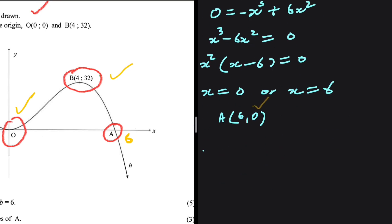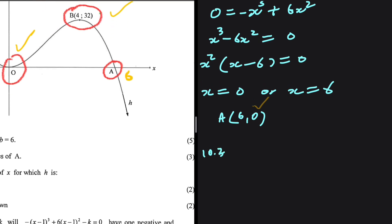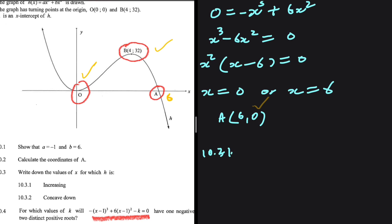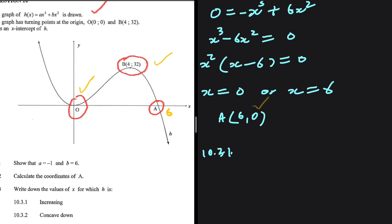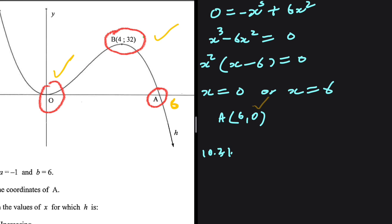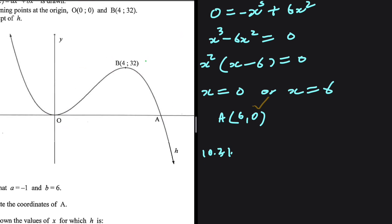Let's look at 10.3.1: write down the values of x for which h is increasing. H is increasing when the slope is positive — that is, from the turning point at x equals 0 up to the turning point at x equals 4. So h is increasing for 0 less than x less than 4. At x equals 0 and x equals 4, the function is stationary — neither increasing nor decreasing.